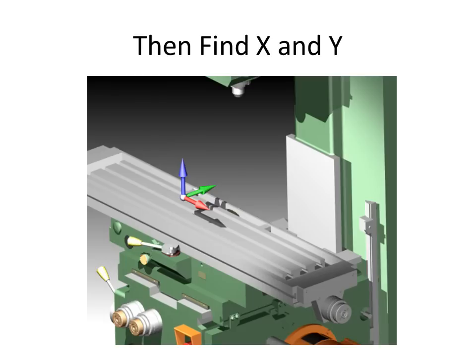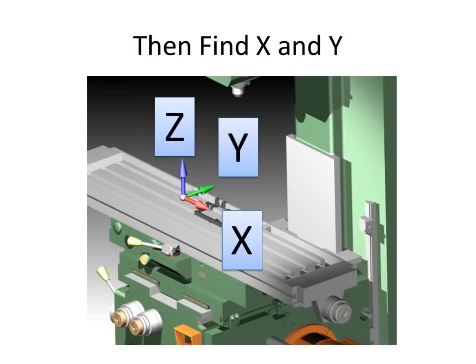Once you've found where the spindle is, what the Z axis is, it's pretty straightforward to find the X and Y axes. The X axis usually is parallel to the floor and is the longest axis that's not the Z axis. The one that's orthogonal to that, following the right hand rule, or at a 90 degree angle to the other two, is the Y axis.